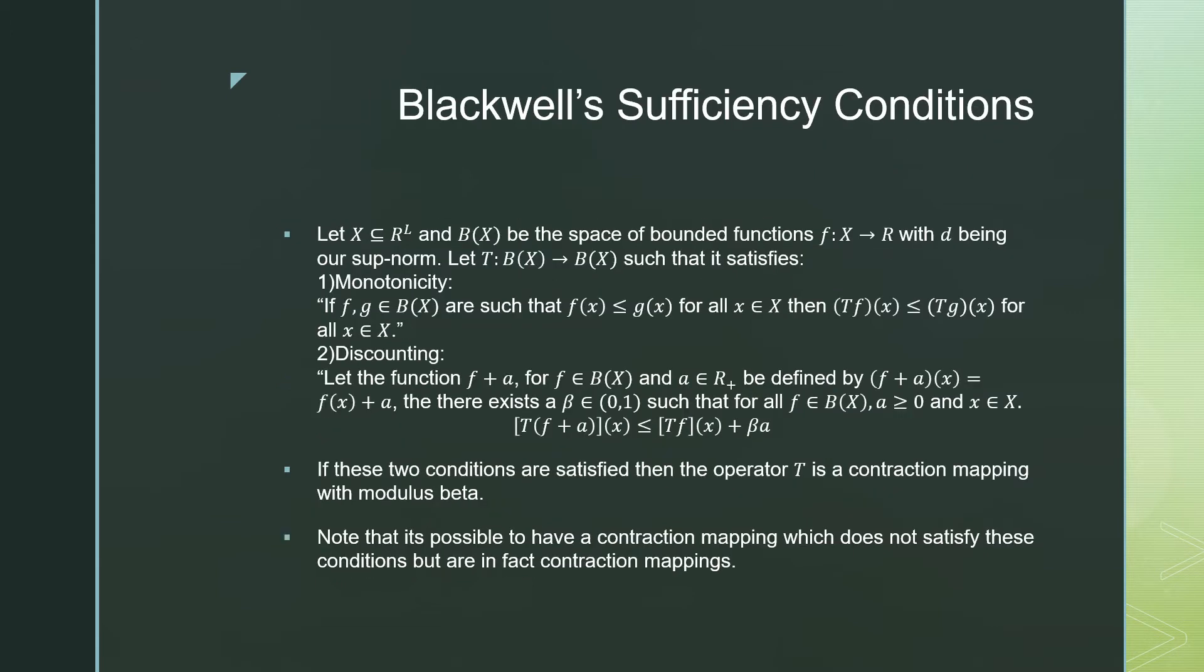So formally, Blackwell's sufficiency conditions state: let X be an improper subset of our real number space in the L dimensions, and B(X) be a space of bounded functions which maps elements from this group X to our real number space, and D, which is our metric, being our sup-norm. Let T be a function which maps B(X), which is our space of bounded functions, to itself, such that it satisfies...